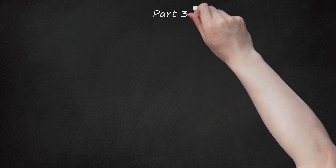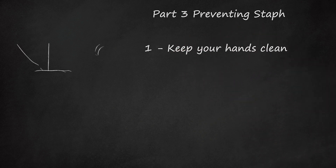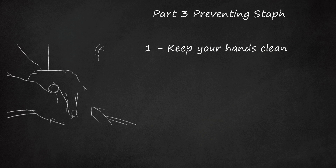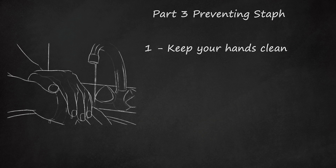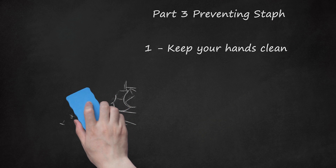Part 3: Preventing Staph. Keep your hands clean. Washing your hands is a simple and effective way to avoid staph infections, as well as a number of other health issues. By keeping your hands clean, you can reduce the chances of a staph infection happening to you. Wash your hands thoroughly for 20 to 30 seconds. Hand sanitizers can be used as long as they have at least 62% alcohol content.